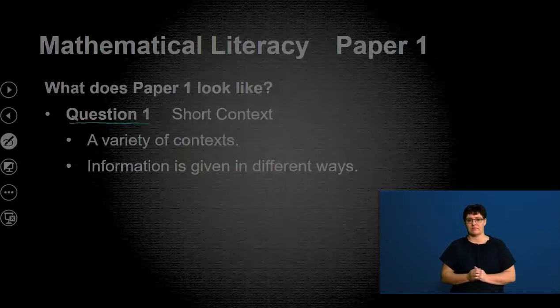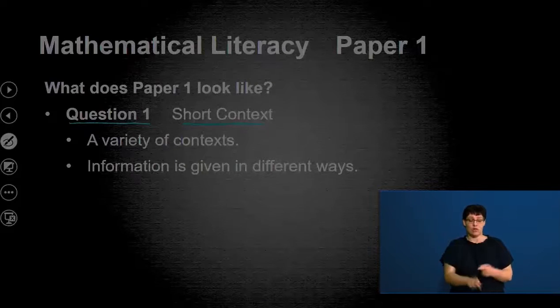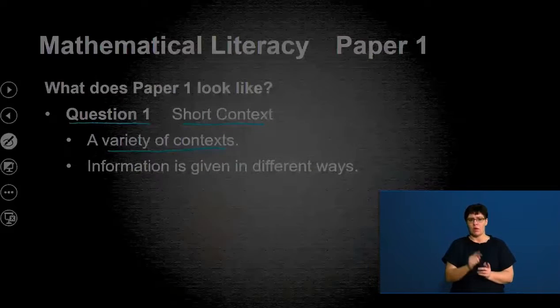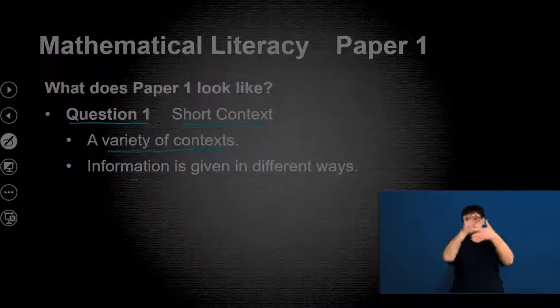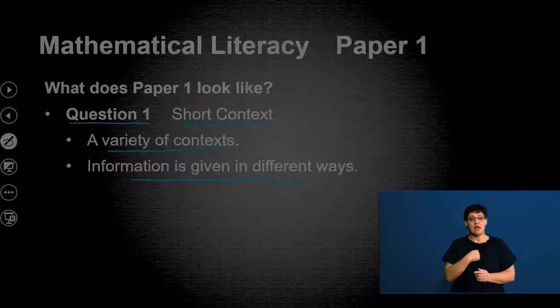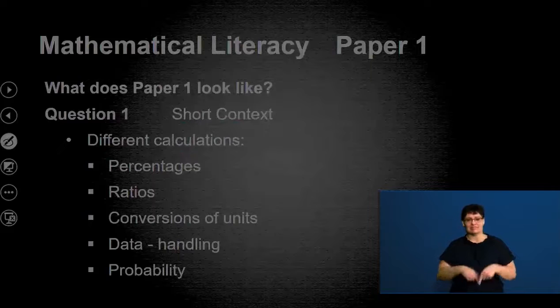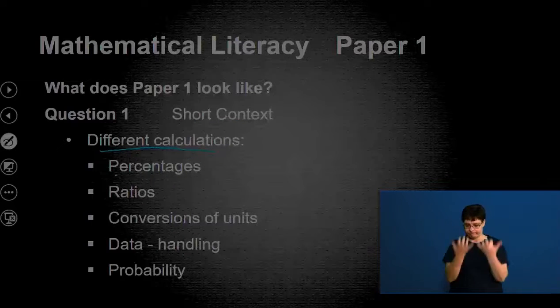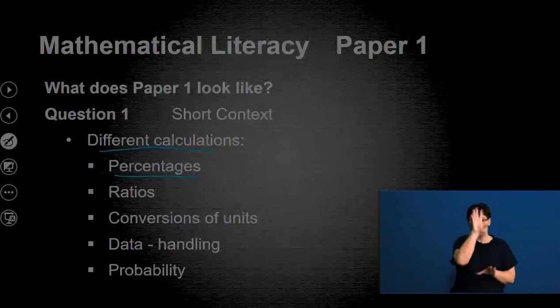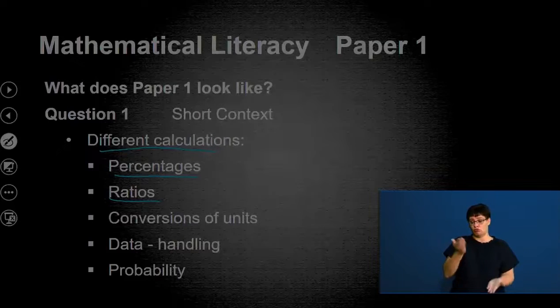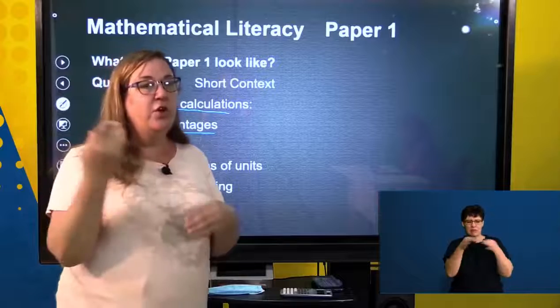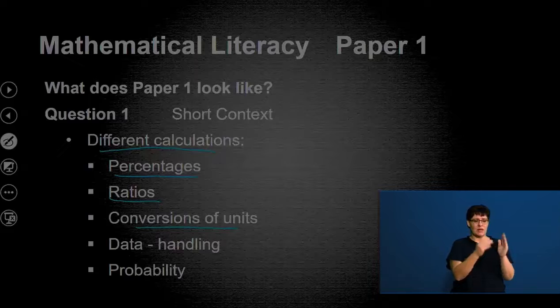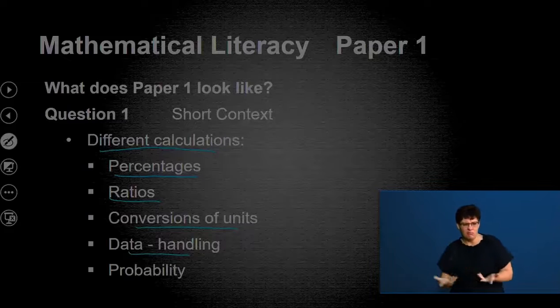Right. More details of the questions. So question one is a short context. There's a variety of contexts, meaning variety of different stories, and information is given in different ways. So that question one, let's go into more detail. There will be different calculations. You might need to do a calculation involving a percentage. You might need to use ratio. So remember how I explained how to use ratio. I think I'll have an opportunity to show you that again. Conversions of units. There might be data handling and there might be probability.